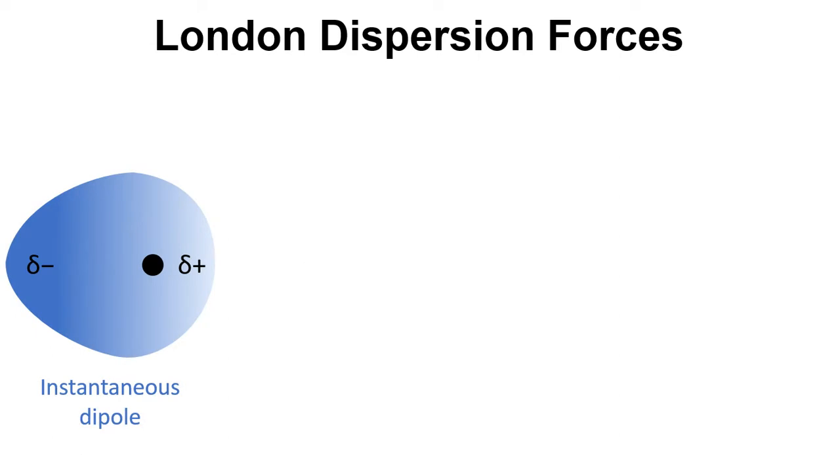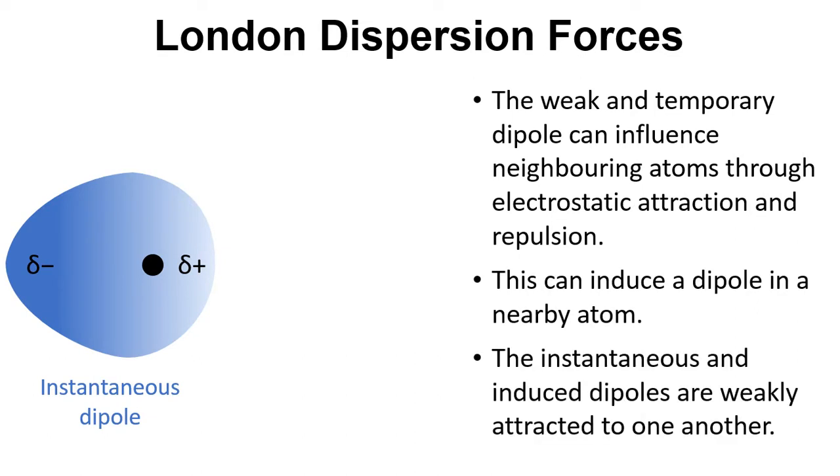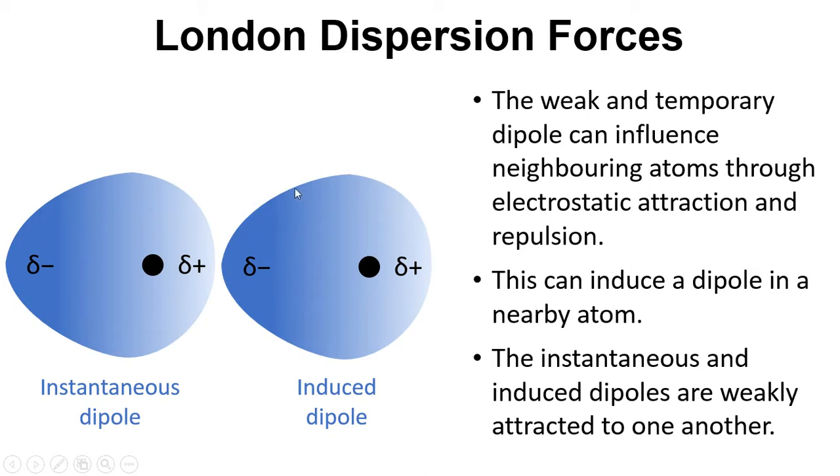If we think about the effect of this on a neighboring atom, we start to understand the attraction as a result of the London dispersion forces. This weak and temporary dipole can influence the neighboring atom and induce a dipole in that atom and then we get some attraction between them. Because this is slightly positive and this is slightly negative, we get attraction between those two atoms. These could be the segments in our SAFT molecule or it could be just non-polar molecules. The London dispersion force is a really important part of understanding SAFT because it explains the attractive part between the segments.